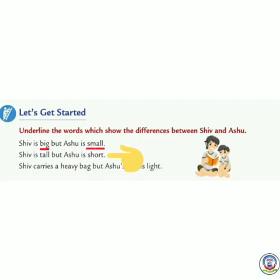Now see the second sentence: Shiv is tall but Ashu is short. So here we will underline tall and short, because these two words are telling us the differences between their heights.